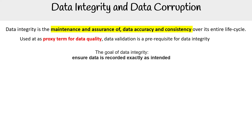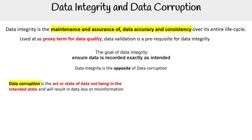The goal of data integrity is to ensure data is recorded exactly as intended. Data integrity is the opposite of data corruption. Data corruption is the act or state of data not being in its intended state, resulting in data loss or misinformation.